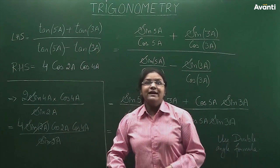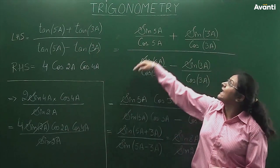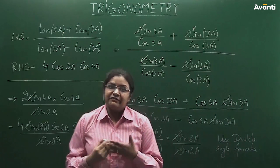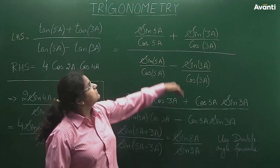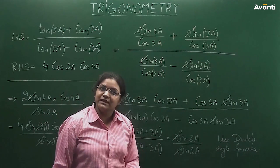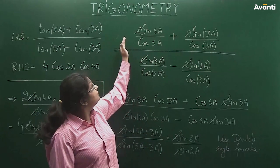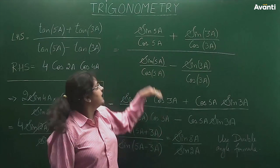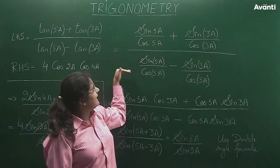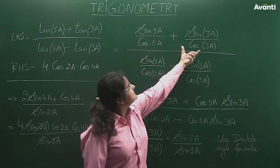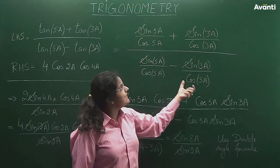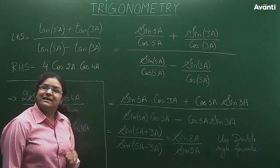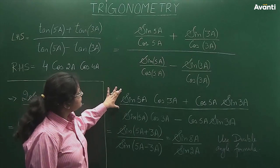Here, I write tan of 5a as sine of 5a over cos of 5a, and similarly tan of 3a as sine of 3a over cos of 3a. So my numerator and denominator are written in this form. Taking the LCM, those terms cancel nicely, and my expression simplifies.